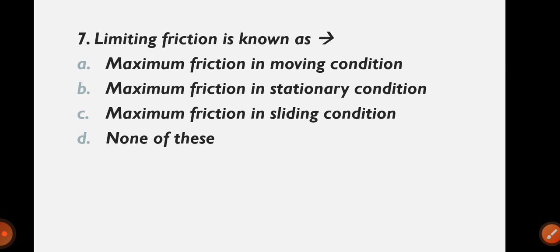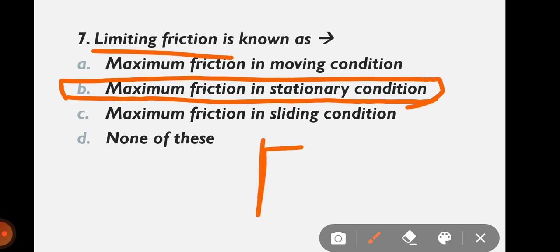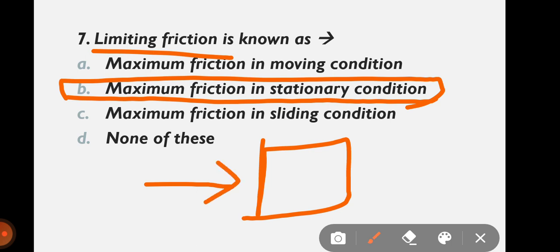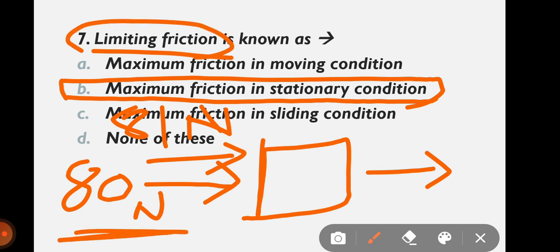Question 7: Limiting friction is known as — maximum friction in the moving condition, stationary condition, sliding condition, or none? The correct answer is option B: maximum friction in the stationary condition. For example, if a box is at rest and you push it with 80 N and it doesn't move, but at 81 N it moves, then the limiting friction is 80 N.